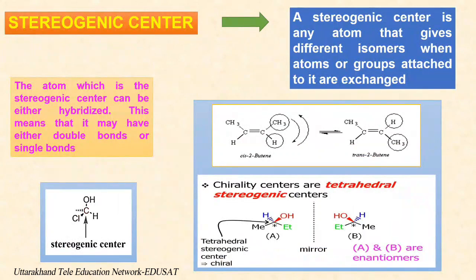Stereogenic center: when an interchange of two ligands bonded to an atom results in a new stereoisomer, the atom is termed a stereogenic center. If the new stereoisomer is an enantiomer, the stereogenic center is a chiral center. All chiral centers are stereogenic centers, but not all stereogenic centers are chiral centers. Stereogenic centers are not necessarily tetrahedral. For example, the double bond carbon atoms of cis and trans 2-butene are trigonal planar stereogenic centers, because an interchange of ligands at either carbon leads to a stereoisomer — that is, a diastereomer.